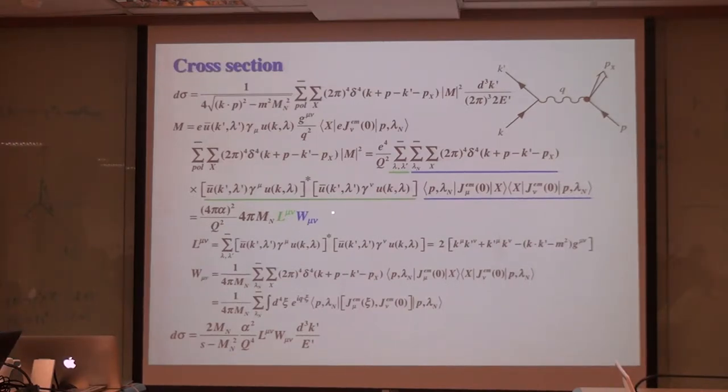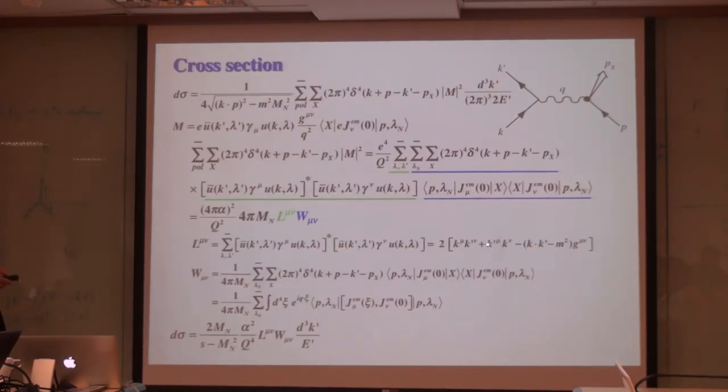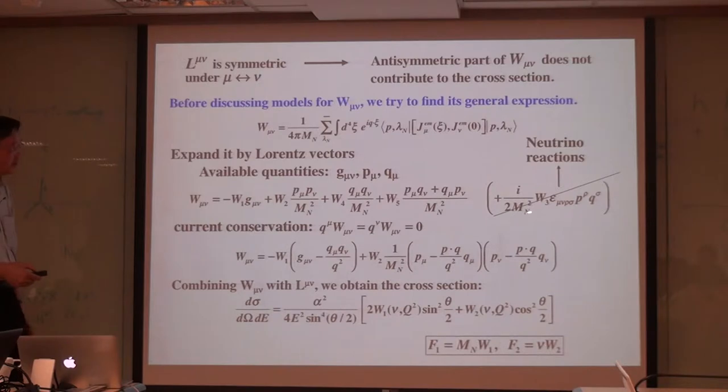On the other hand, the hadronic tensor we may express by the commutation relations in two kinds. We can express this hadron tensor W mu nu by expanding it by the possible Lorentz vectors, like g mu nu, P mu, P nu, and so on. In electron scattering, the structure function W3 is missing.